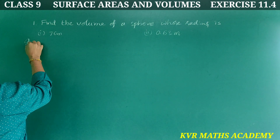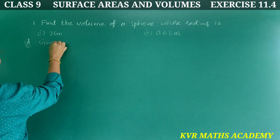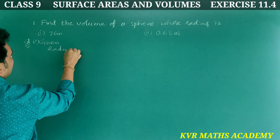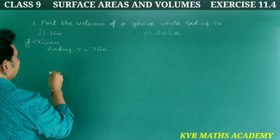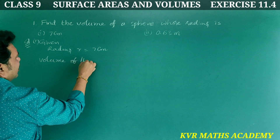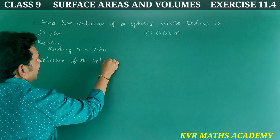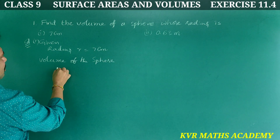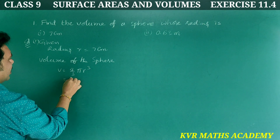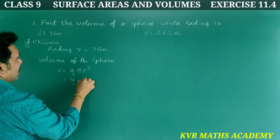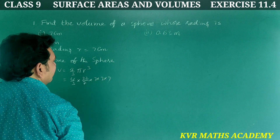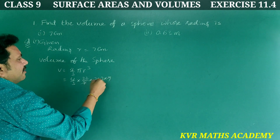Solution for first part: given radius r = 7 centimeters. Volume of the sphere V = 4/3 × π × r³ = 4/3 × (22/7) × 7 × 7 × 7.